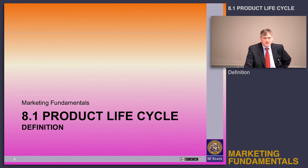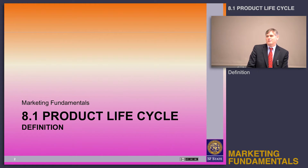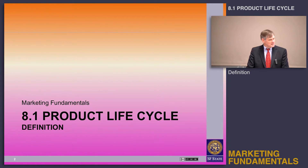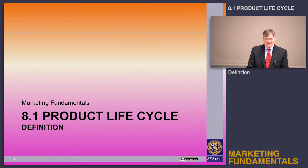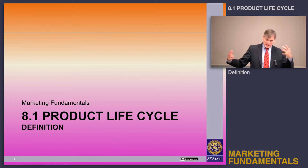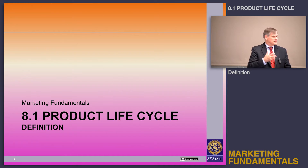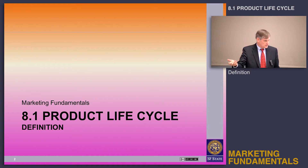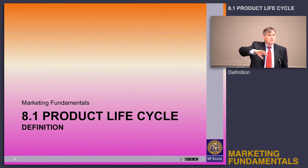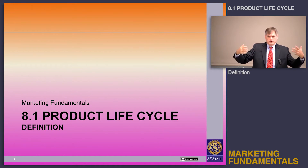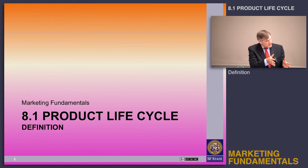We are going to continue talking about the product. Last time we learned that a product is — this is like a fill in the blank — a thing that you're selling. To be more specific, it's a bundle of tangible and intangible attributes. The point is that it's not necessarily a thing; it's anything that somebody is willing to exchange something of value for. We talked about the product adoption process for individuals and the diffusion process for how large groups of people adopt products over time, going from the individual to the mass.